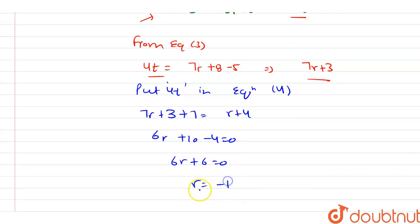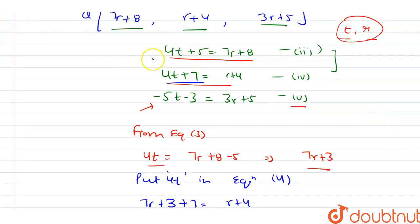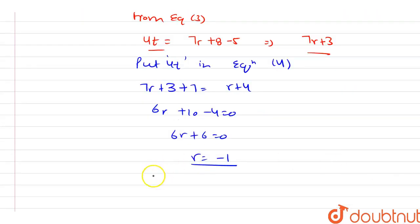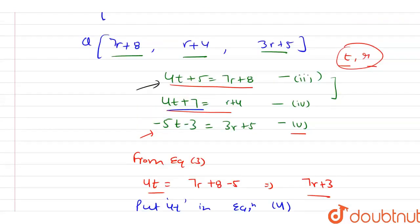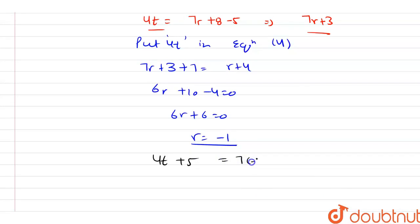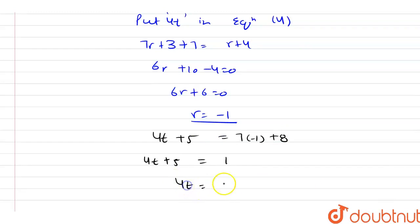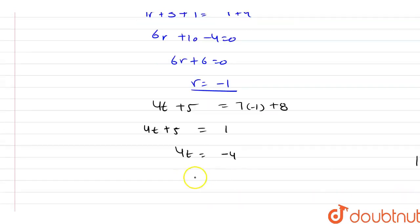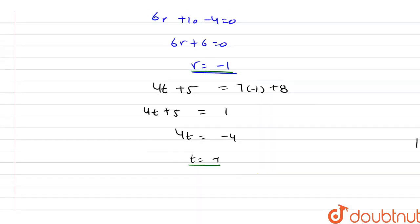From 6r+6 = 0, the value of r is -1. Substituting r = -1 into equation 3: 4t+5 = 7(-1)+8 = 1, so 4t = -4, giving t = -1. Both t and r equal -1.